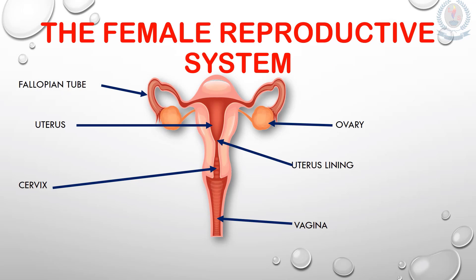Now let's learn what are the main parts of the female reproductive system. Look at the picture very carefully. In the picture you can see there are two fallopian tubes, two ovaries, uterus, uterus lining, cervix, and the vagina. Those are the main parts of the female reproductive system.